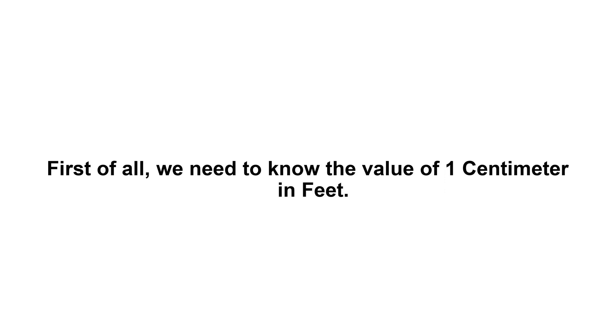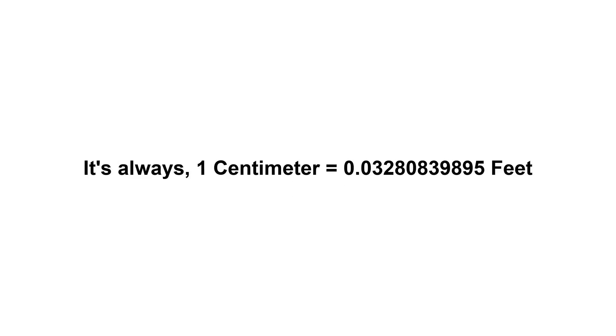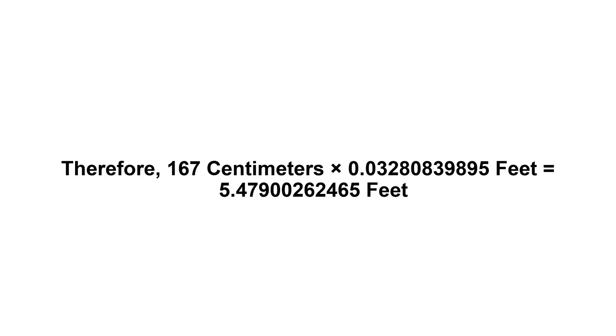167 centimeters in feet. First of all, we need to know the value of one centimeter in feet — one centimeter equals 0.03280839895 feet. Now we have to multiply 0.03280839895 by 167. Therefore, 167 centimeters times 0.03280839895 feet equals...